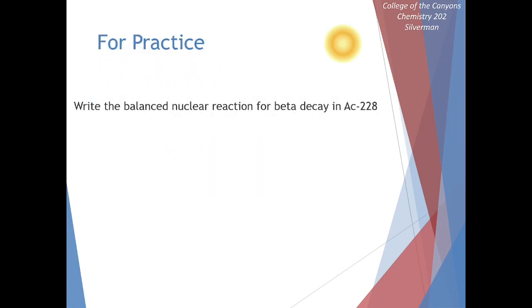Let's take a moment for a practice problem here. Let's write the beta decay for Ac-228. We get to start with Ac-228. We're producing this beta particle, which you can write either as e or as that beta, and then we have to write our daughter nuclide. In order for this to be balanced, we need to have a mass number of 228, and we need to have an atomic number of 90. This corresponds to element Th.